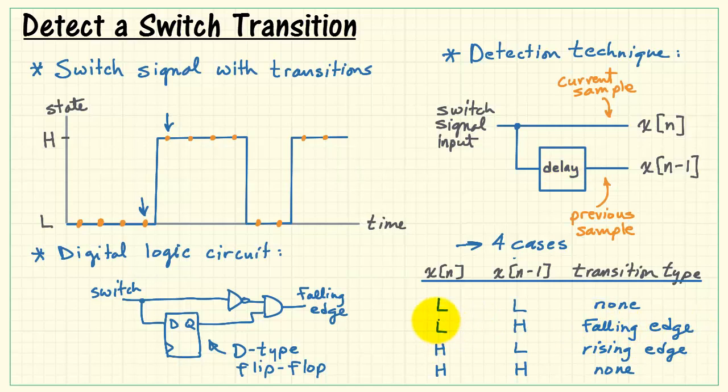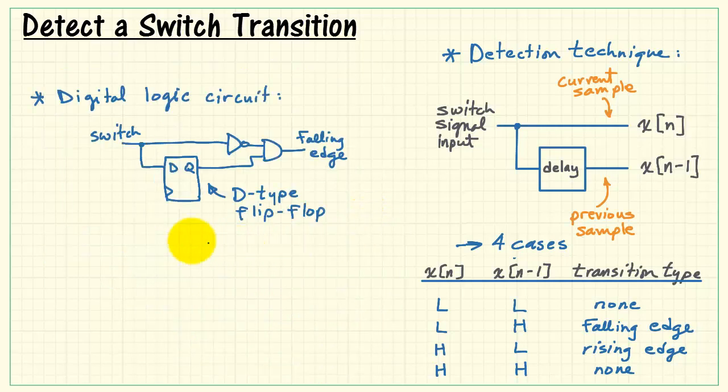And if we look at detecting a falling edge, if I invert that low to a high, and then AND that with a high signal from the previous edge, then we have just in fact developed a circuit that goes high to indicate a falling edge.